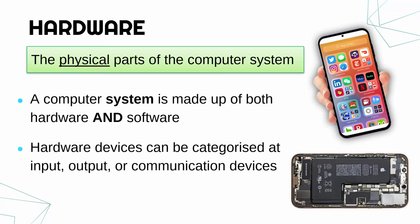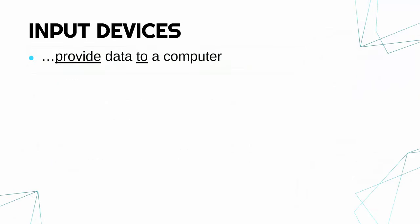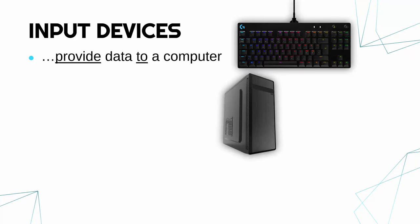Hardware devices can be categorized in loads of ways, and we'll cover some in future videos. But for now, let's try and put some devices into the categories: input, output, and communication devices. Starting off with input devices — input devices are hardware which provide data to a computer. So we've got a computer, a computer tower. Something like a keyboard is a great example of an input device.